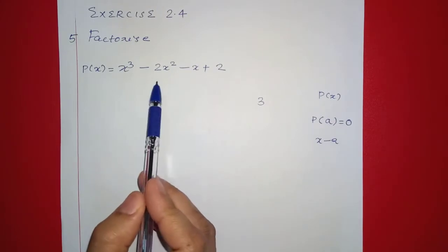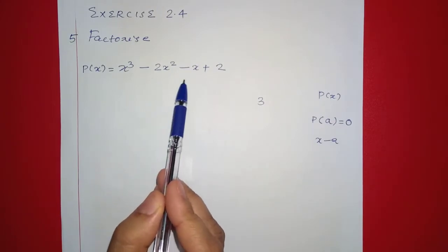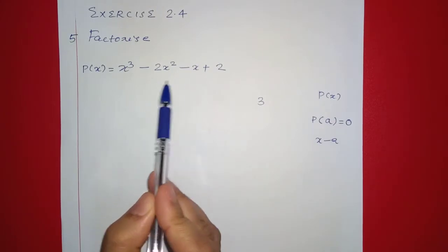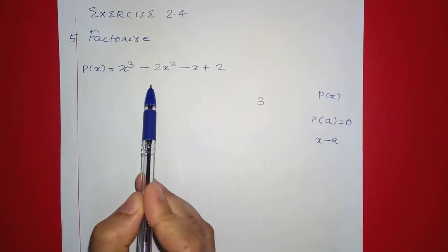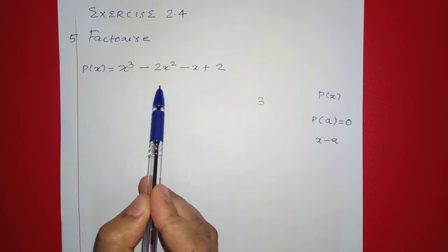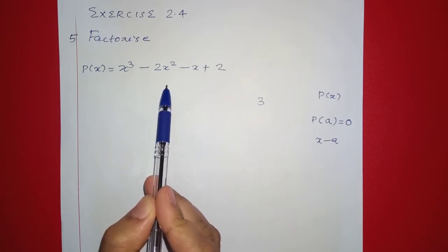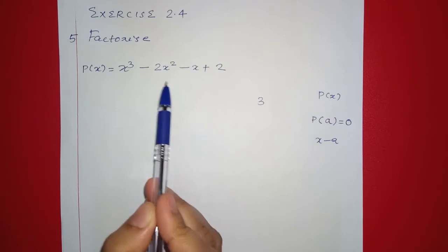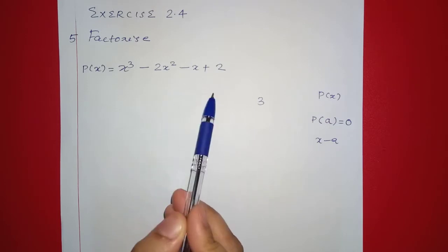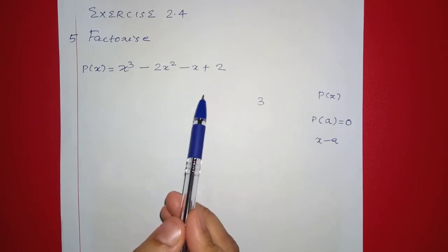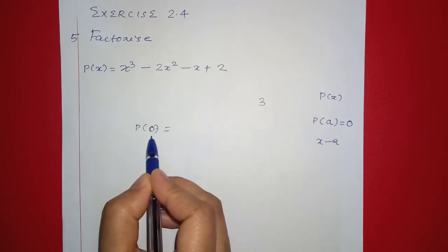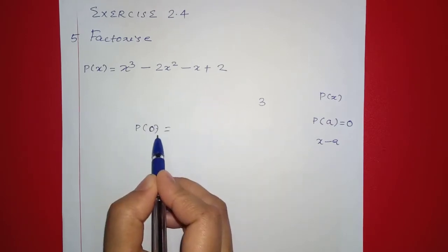We will find the numbers — let's add P of x values. Let's start with 0, 1, minus 1. Let's add values. P of 0: substitute x equals 0.